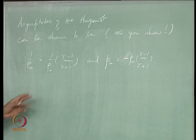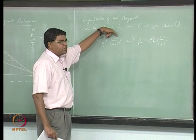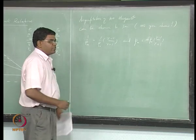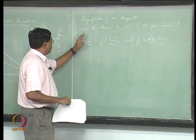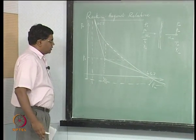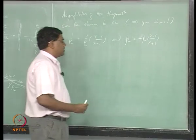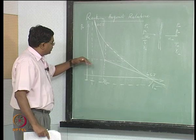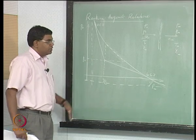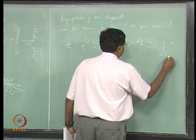Since γ, the ratio of specific heats, is greater than 1 — say about 1.25 — the quantity (γ−1)/(γ+1) is always less than 1. So 1/ρ∞ is always less than 1/ρ₀, meaning the asymptote is to the left of the origin. Similarly, p∞ comes out negative, which is not physically possible.